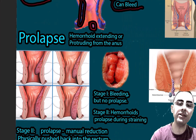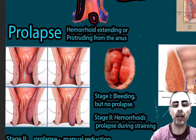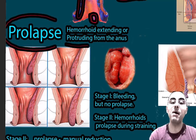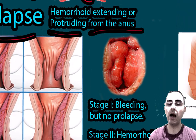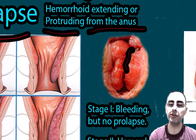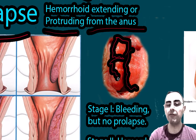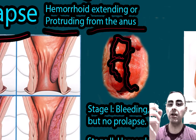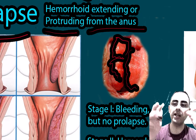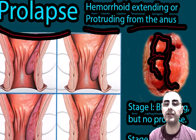In the case of internal hemorrhoids, there are four stages, also called prolapse stages. Prolapse refers to when hemorrhoids extend or protrude from the anus — moving from inside to outside the anus — where the person can see or feel them with their hands and fingers.